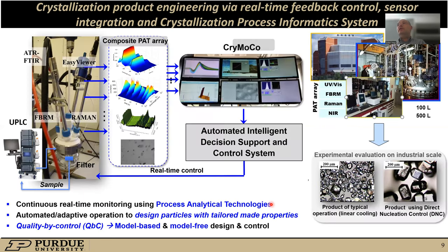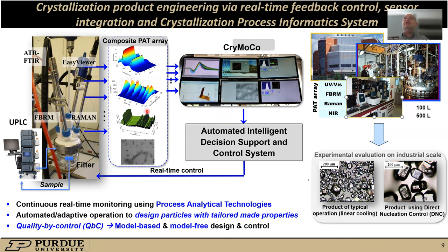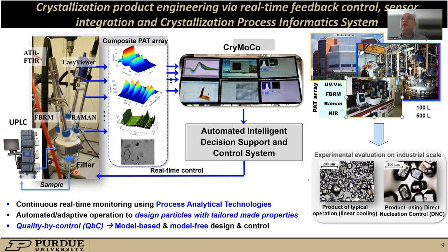I'm going to show some examples of how we can use smart manufacturing concepts to enhance the manufacturability of a variety of pharmaceutical compounds. This shows how in-situ process analytical technologies can be used to understand the crystallization process. In this setup, we have a crystallizer with an array of different tools which measure in-situ properties of the crystals, properties of the liquid and solid phase, simultaneously feeding that into a monitoring and control framework called a crystallization process informatics system, which takes all this PAT information into account and provides an automated intelligent decision support and feedback control approach that adapts the operating conditions of the crystallizer to drive the process to produce crystals of desired critical quality attributes.